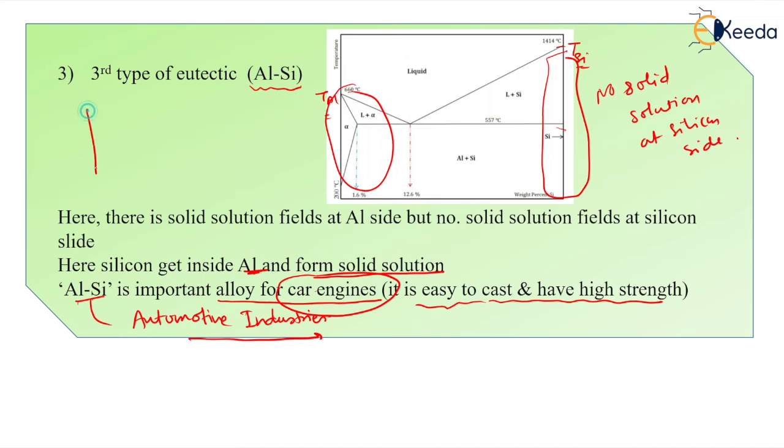If I show you here, there will be the white matrix. This background is of aluminum, and there will be the needle-like structure like this.